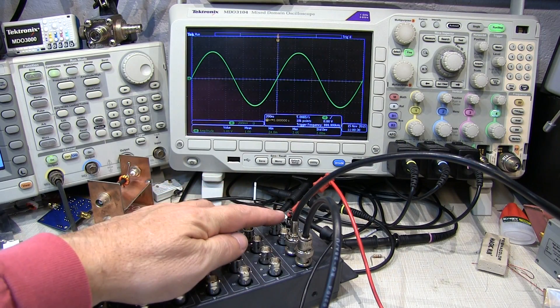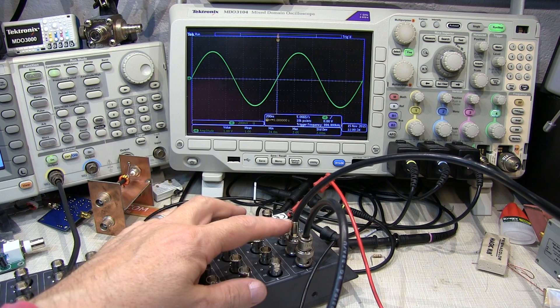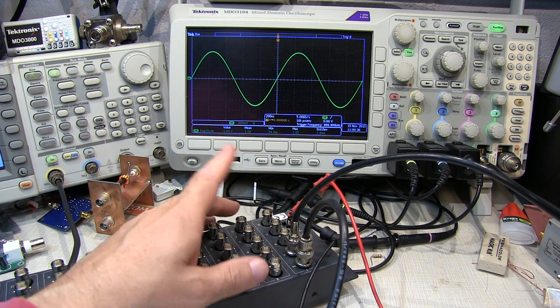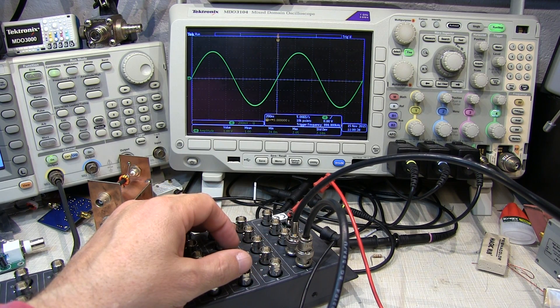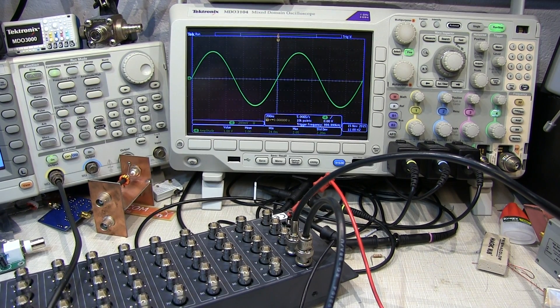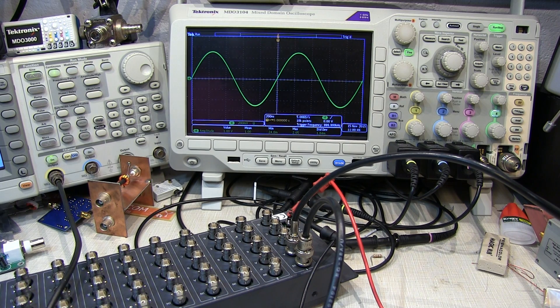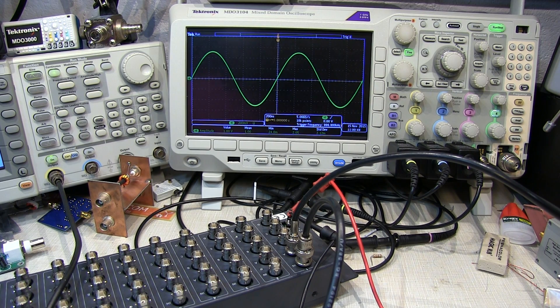Now, hooking up power to the unit and applying an input signal from my signal generator and taking a look at the output of one of the channels, looks like I get a decent signal through here. So I want to do a quick check to see if the bandwidth is what the datasheet says. The datasheet says we should have a 16 megahertz 3dB bandwidth.